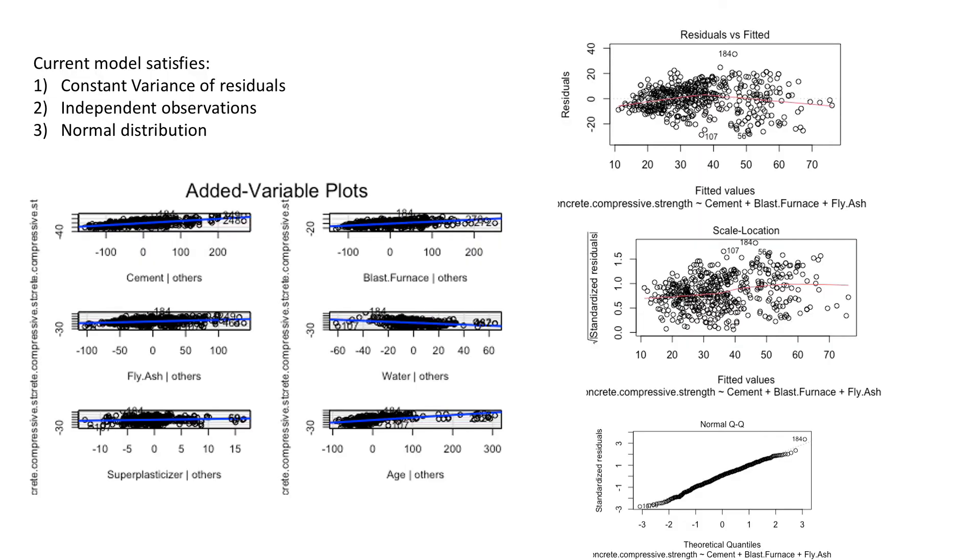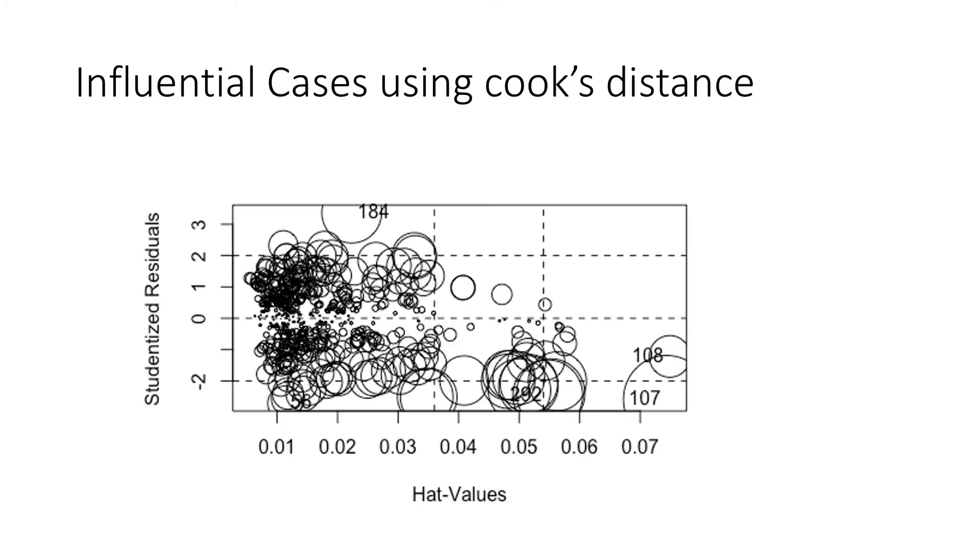Now, our current model, which does not include the coarse and fine aggregate, satisfies all our assumptions of constant variance, linearity, independent observations, and normal distributions. However, when I plotted upon further investigation using the influence plot function, I was able to see that the number of potential influential cases seemed pretty high and prominent in our data set, as we can see from the influential plot and influential cases plot using Cook's distance.